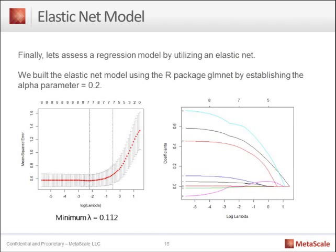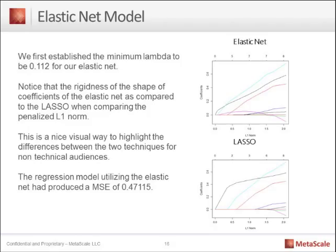Finally, we're going to run an elastic net. The elastic net is of particular interest in healthcare because it allows for a correlation of certain variables to be included in the model. For example, when looking at genomic data there might be certain markers we don't want to exclude using the lasso model. As healthcare analytics advance, we want to ensure we're using the appropriate method, and elastic nets are particularly well-suited for healthcare applications. We run our elastic net and calculate a mean squared error of 0.47115.